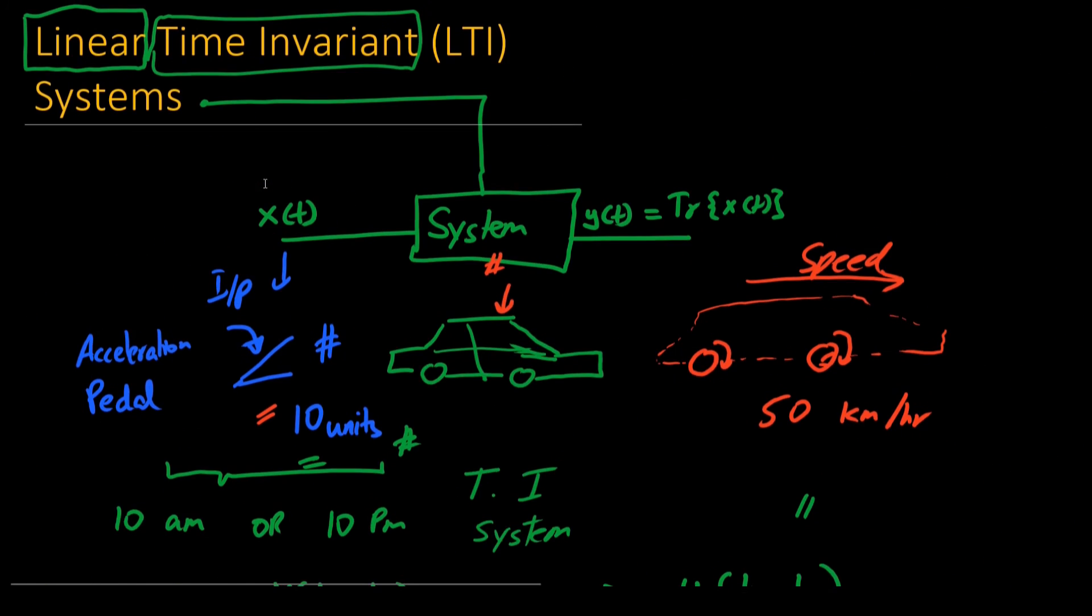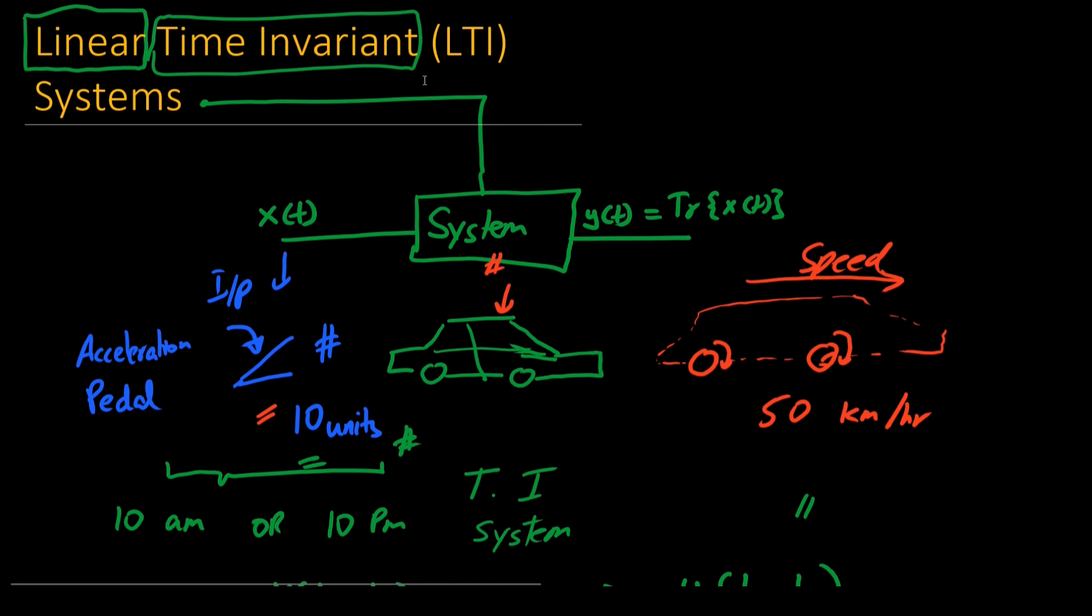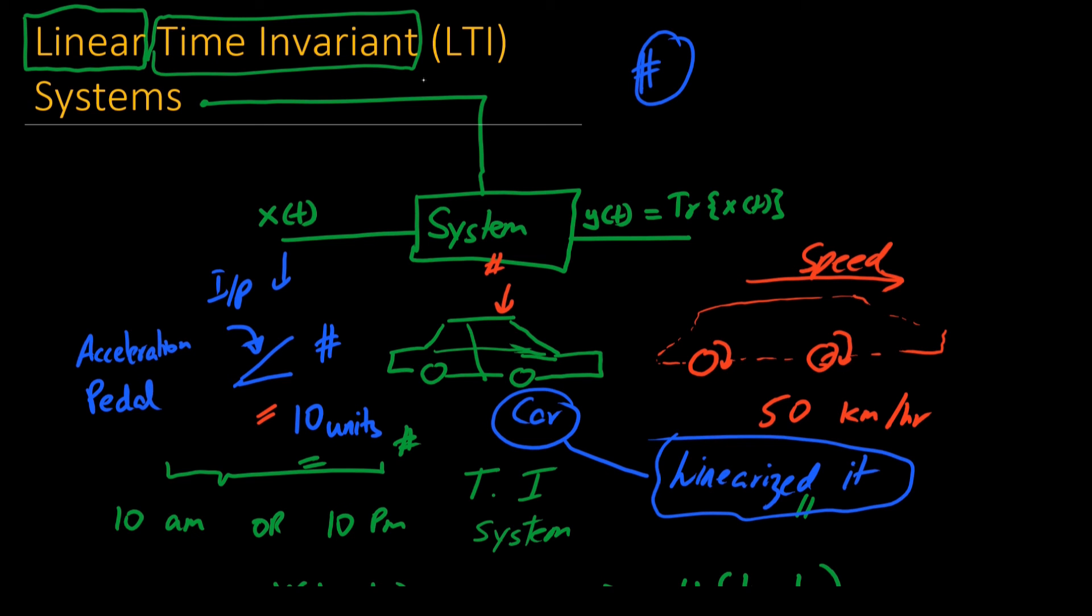Hence, linear and time invariant systems, that is LTI systems, are a simplification of more generic kinds of systems. For example, a car is not an LTI system, but for analysis purposes we have assumed it to be linear or linearized it somehow. And by doing so we can perform the Fourier and Laplace analysis on such LTI systems.